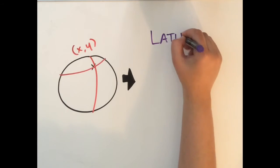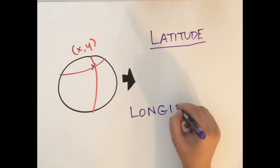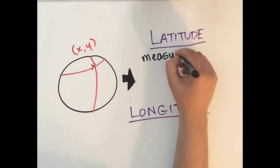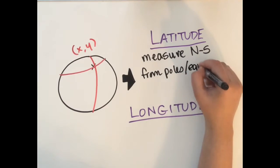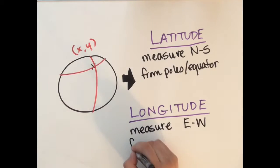For an absolute measure of location, one needs to use latitude and longitude, which provide x-y coordinates for every point on the Earth's surface. Latitude measures north-south, while longitude does it east-west.